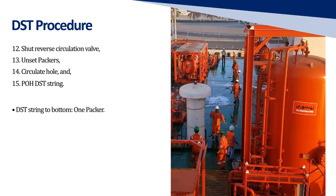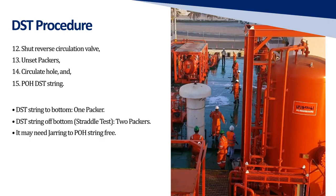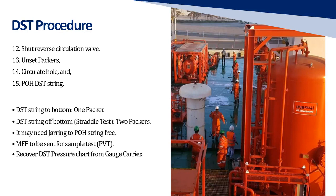DST string to bottom uses 1 packer. DST string off bottom, straddle test, uses 2 packers. It may need jarring to pull the string free. The MFE sample is to be sent for PVT analysis. Recover the DST pressure chart from the gauge carrier.